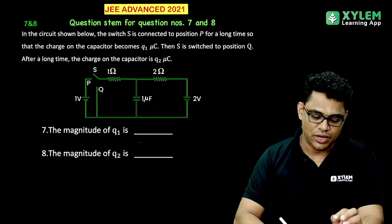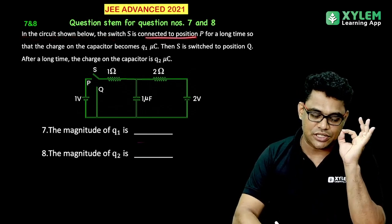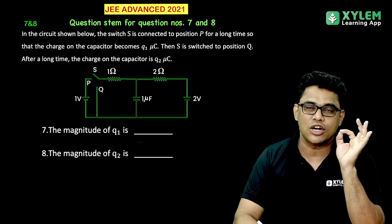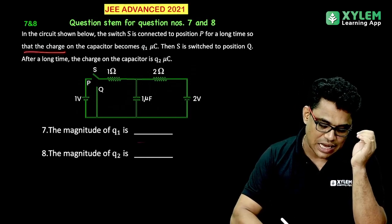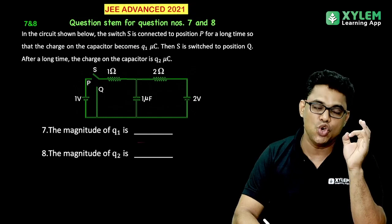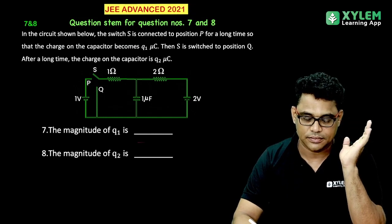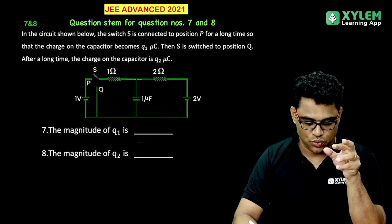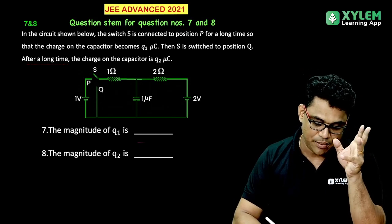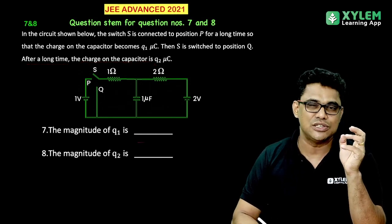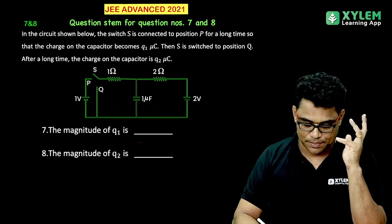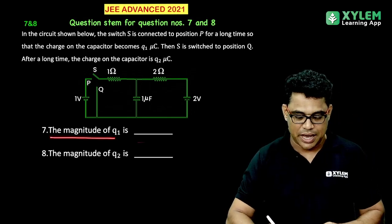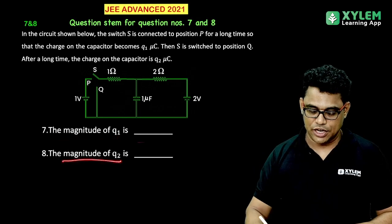In the circuit shown below, the switch S is connected to the position P for a long time, so that the charge on the capacitor becomes Q1. Then S is switched to the position Q. After a long time, the charge on the capacitor is Q2. We have the magnitude of Q1 and the magnitude of Q2.